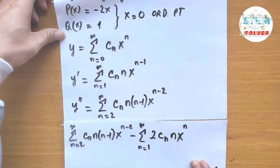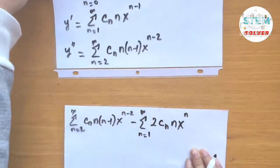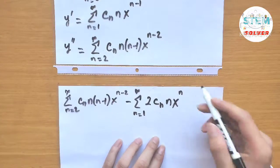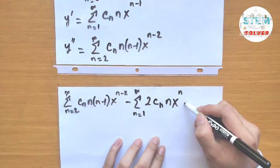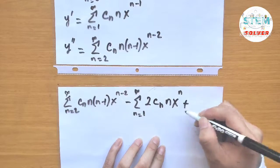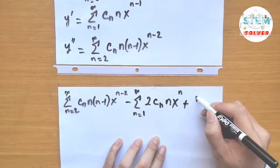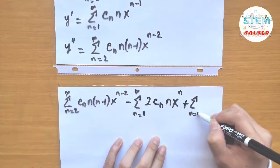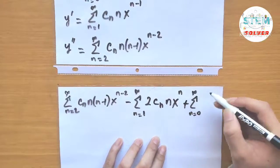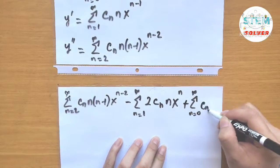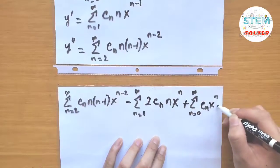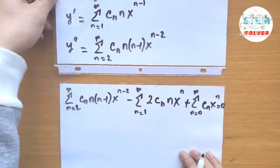The next series is plus y, which is the power series from 0 to infinity of c_n times x to the n, all equal to 0.